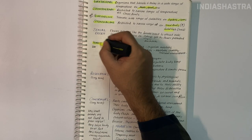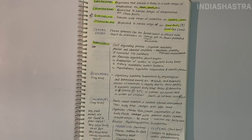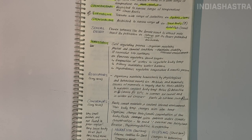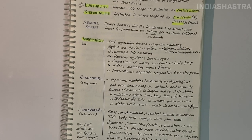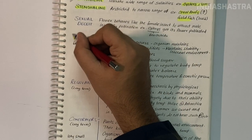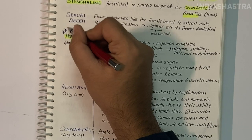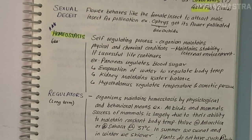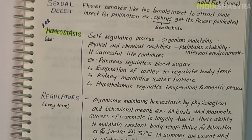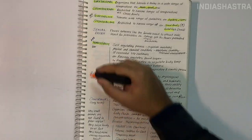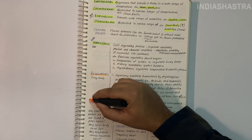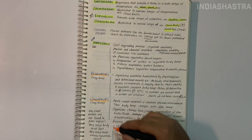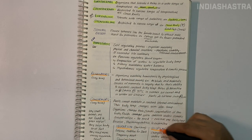Homeostasis is a self-regulating process by which an organism maintains stability while adjusting to conditions best for survival. Depending on responses to abiotic factors, we find two types of organisms: regulators and conformers.